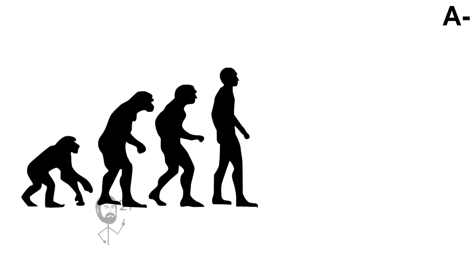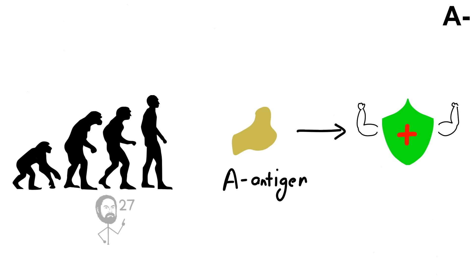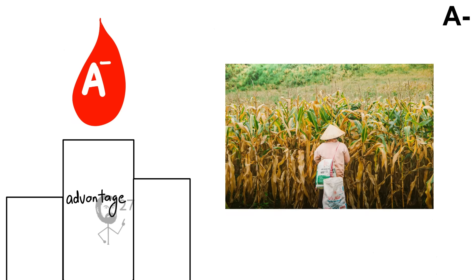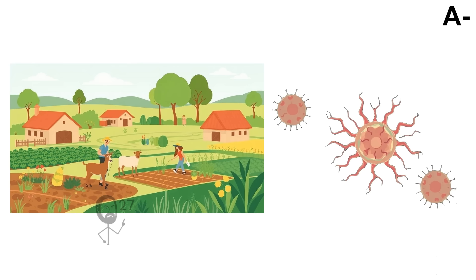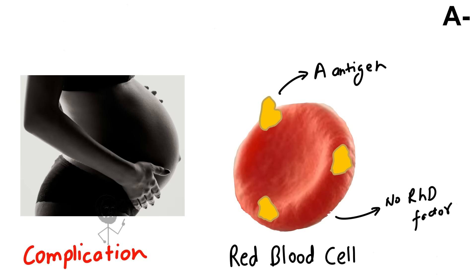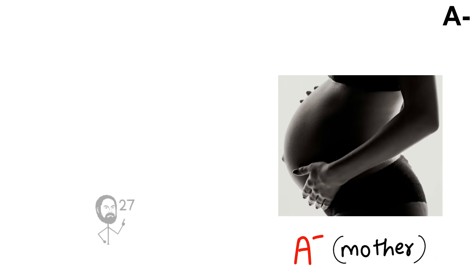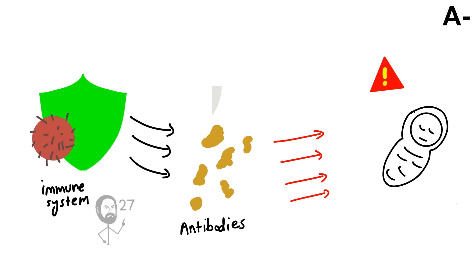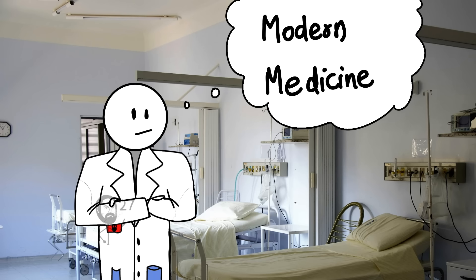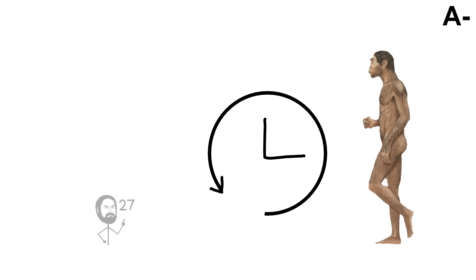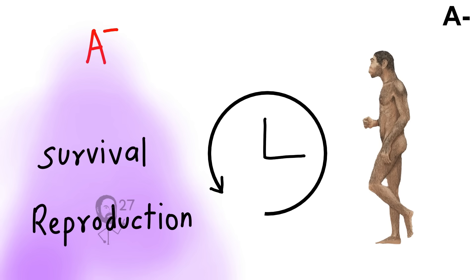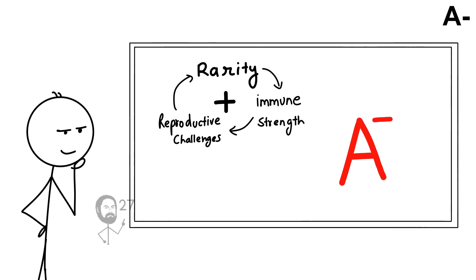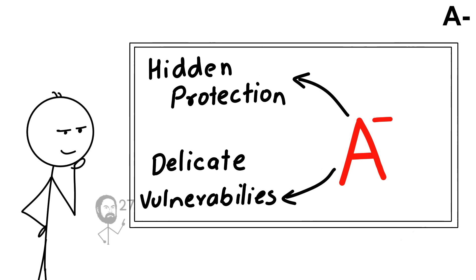From an evolutionary perspective, the A antigen has been associated with stronger immune defenses against certain bacterial infections, a possible advantage in ancient farming societies where crowded living increased disease exposure. However, the absence of the RHD factor adds a complication in pregnancy. If an A-negative mother carries an RH-positive child, her immune system can produce antibodies that endanger the baby's red blood cells. Modern medicine controls this risk with preventive treatment, but in earlier eras it likely influenced survival and reproduction. The combination of rarity, immune strength, and reproductive challenges makes A-negative a blood type with both hidden protections and delicate vulnerabilities.